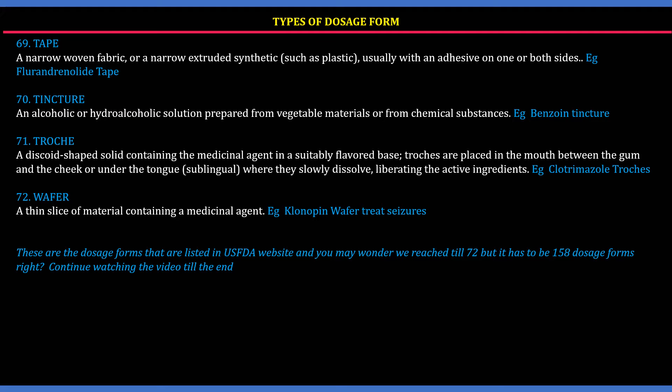70. Tincture: An alcoholic or hydroalcoholic solution prepared from vegetable materials or from chemical substances. Example: benzoin tincture. 71. Troche: A discoid-shaped solid containing the medicinal agent in a suitably flavored base. Troches are usually placed within the mouth between the gum and cheek, or under the tongue, where they dissolve slowly, liberating the active ingredients. Example: clotrimazole troches.